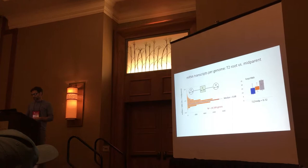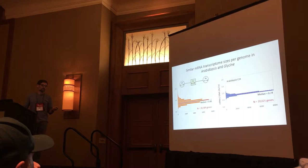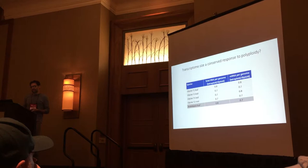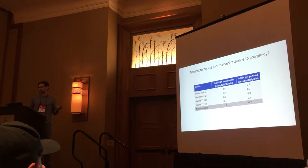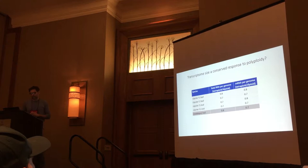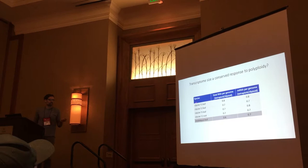We see a very similar estimate in the T1 polyploid and notably also in an Arabidopsis autopolyploid. It appears the transcriptome size response is a concerted response to genome duplication: when you double the genome, you end up with about 70 to 80 percent of the level of transcription per genome in the polyploid that there was in the diploid parents. This holds true for both messenger RNA and total RNA, across multiple species including natural established allopolyploids and nascent autopolyploids.